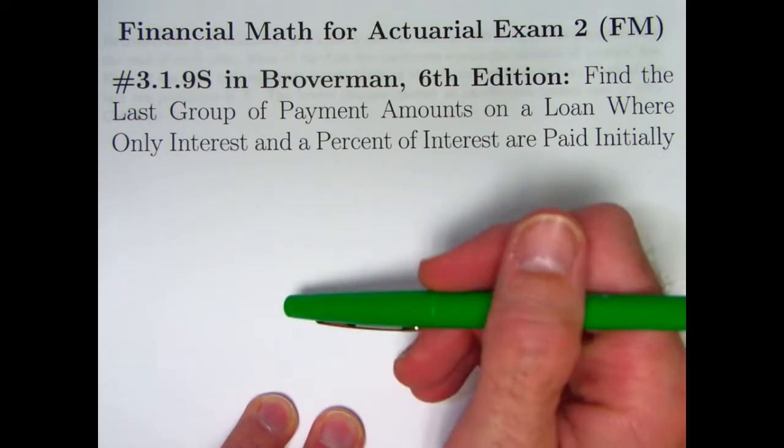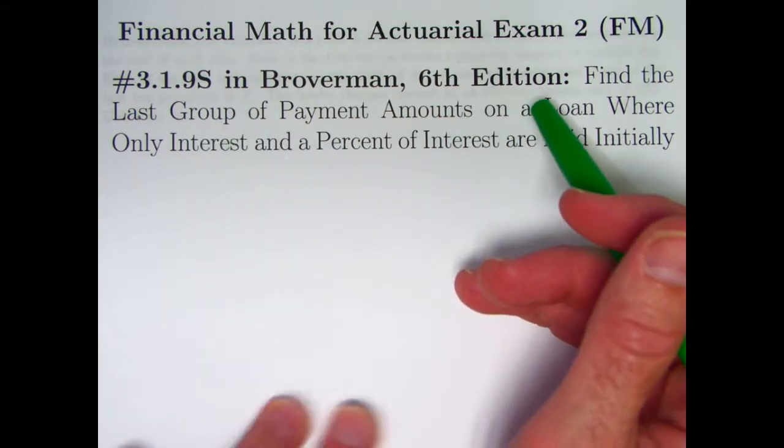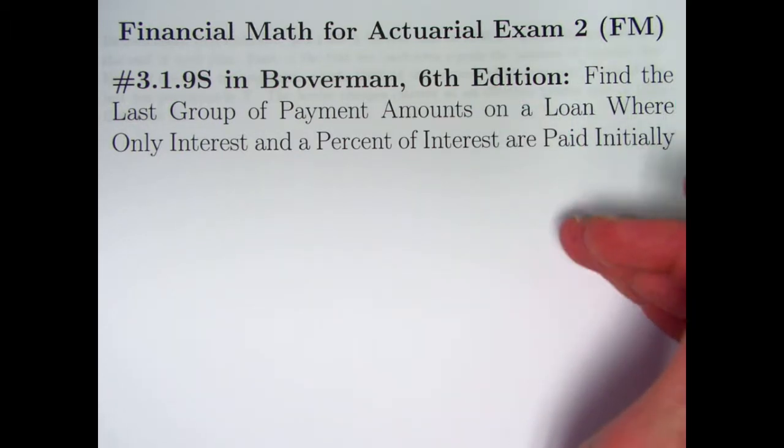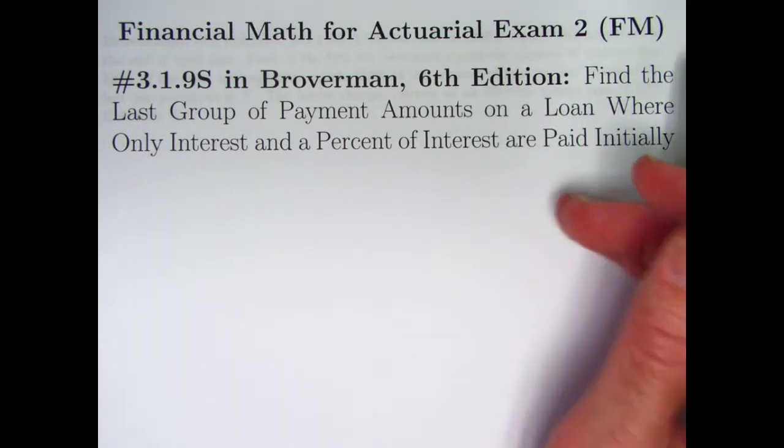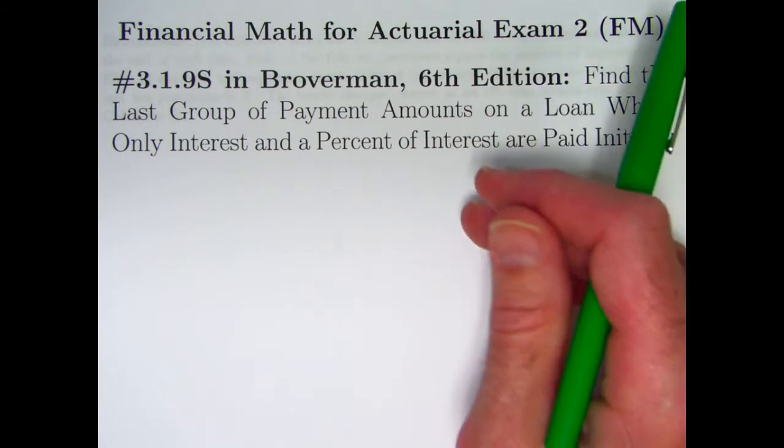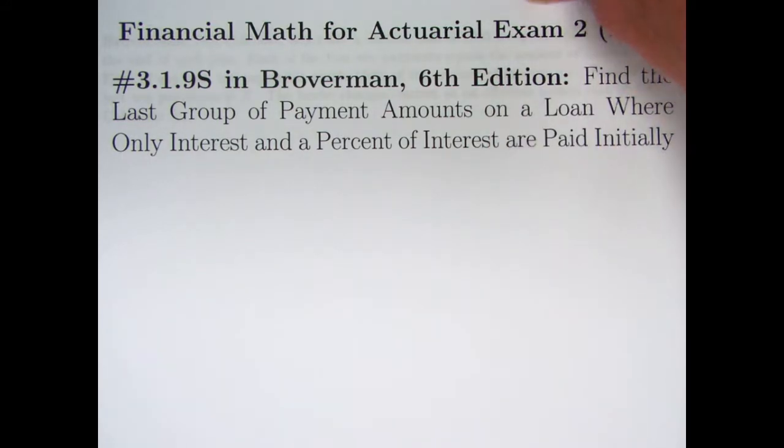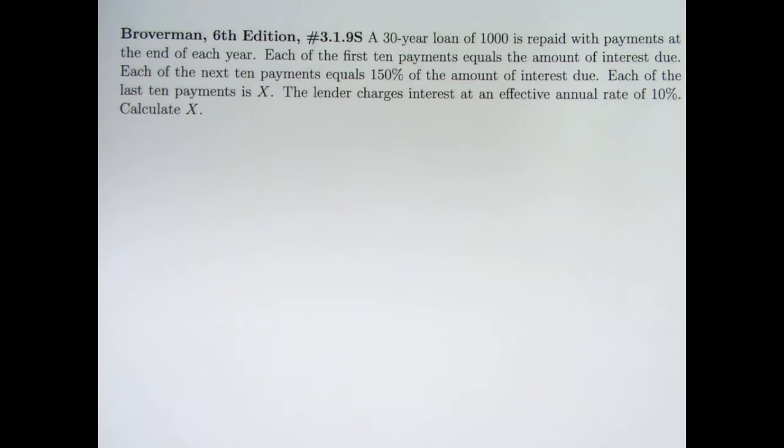It's going to be a 30-year loan where the first 10 years only interest is paid, where the second group of 10 years 150% of the interest due is paid, and for the last 10 years the ordinary amortization schedule holds. And we want to find the level monthly payment or yearly payment.